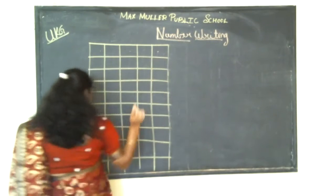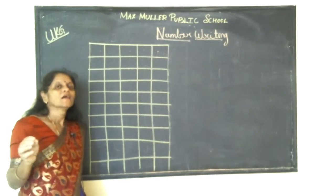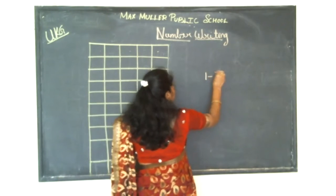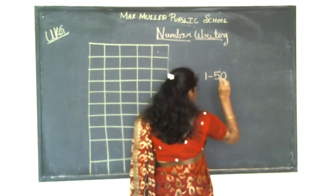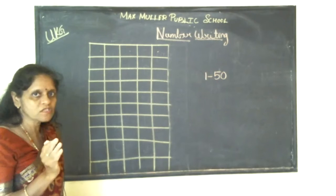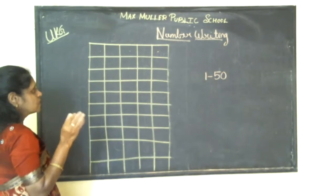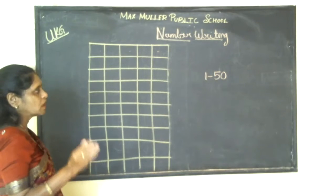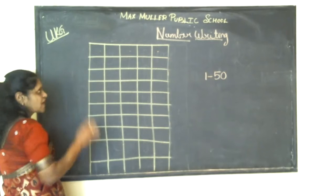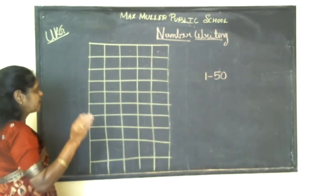Number writing. In the previous class, you learned from 1 to 50. In the previous class, what did you learn? From numbers 1 to 50. This class — in LKG, you learned up to 100. This is a bridge course and you are revising the LKG portions. The previous class, where did you learn? From 1 to 50. Now, we will start from 51. You should write in the box line book.